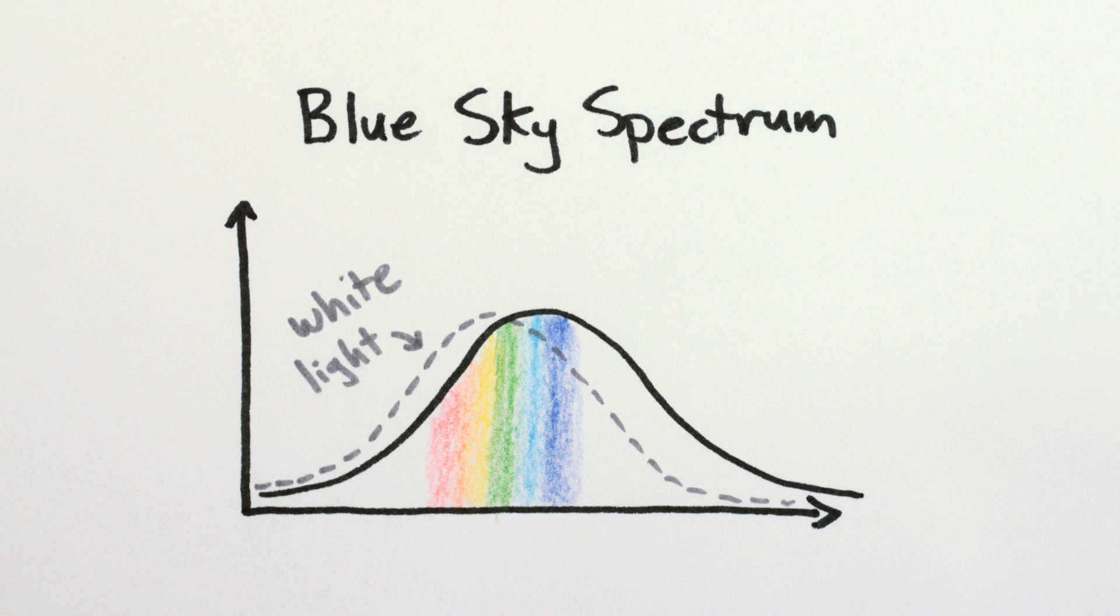You can see a simple demonstration of this on a computer if I take a white background, add a bit of deep blue, and subtract a tiny bit of pure red. I get a nice sky color.